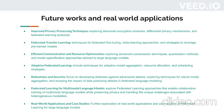First, improve privacy preservation techniques: privacy preservation is a crucial aspect of federated learning. Future research can focus on developing more robust and efficient privacy preservation techniques for large language models. This includes exploring advanced encryption schemes, differential privacy mechanisms, and federated learning protocols that provide stronger privacy guarantees while maintaining model accuracy.